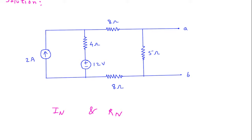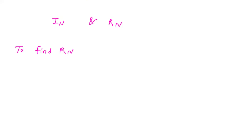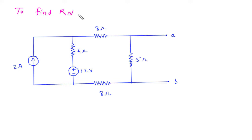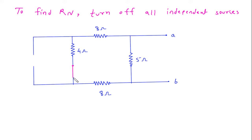First we will find Rn. To find Rn, turn off all independent sources. This is the current source, so this will be open circuit. This is the voltage source, so this will be short circuited. And this will be Rn.